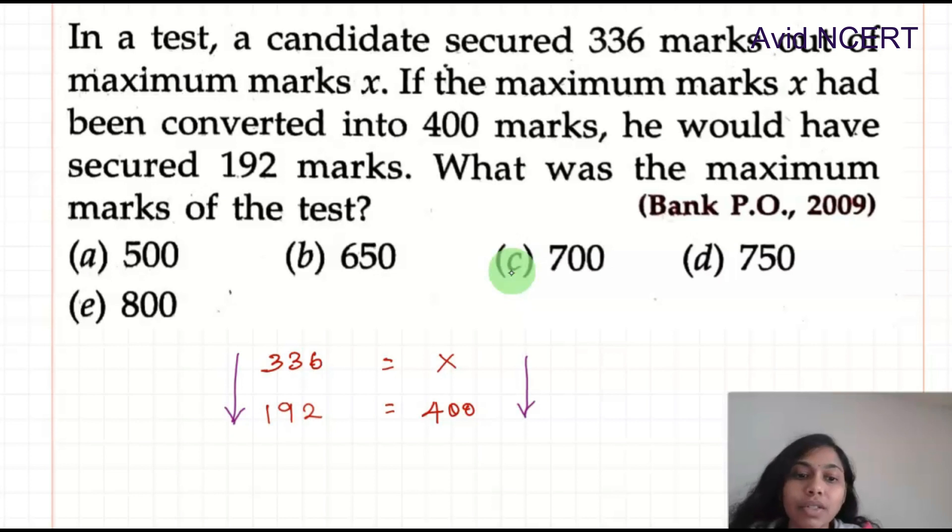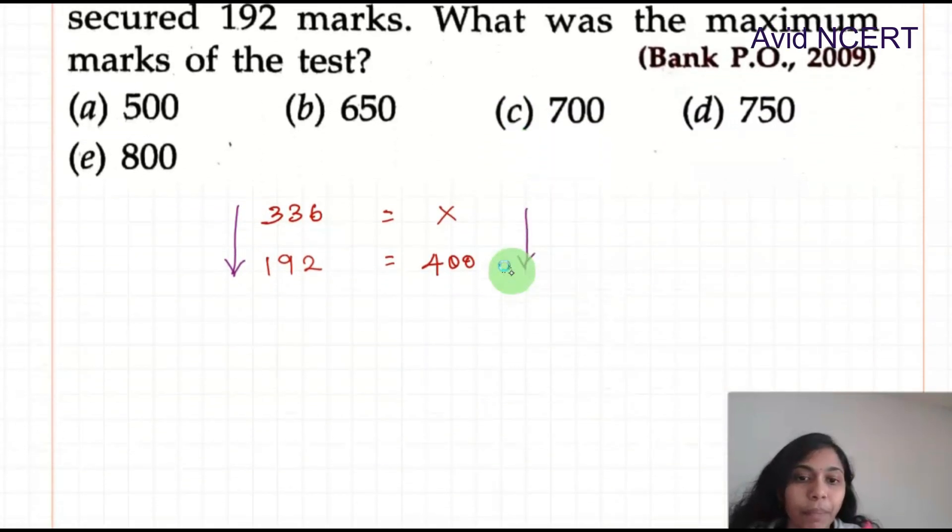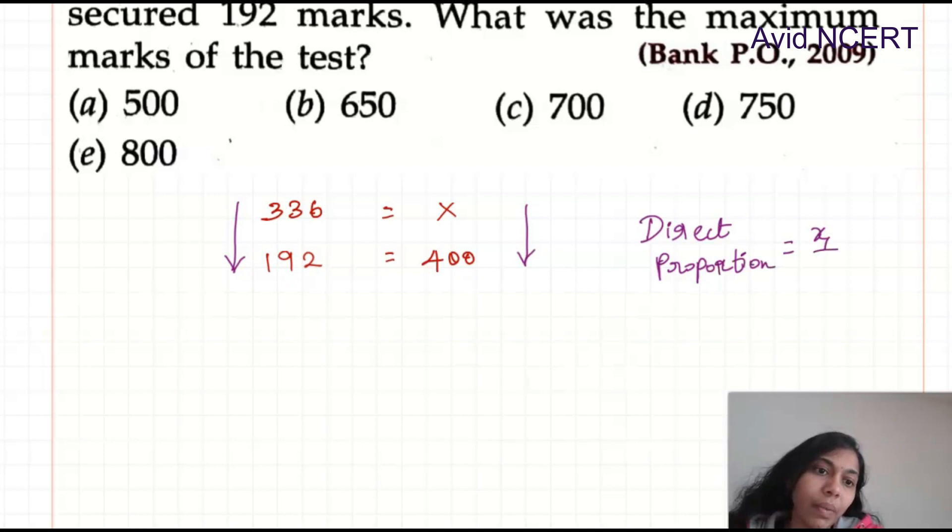When one side increases, the other side also decreases - it's direct proportion. In direct proportion, x1 by y1 equals x2 by y2, which is x1 times y2 equals x2 times y1 by cross multiplication. This is how we will find the direct proportion.